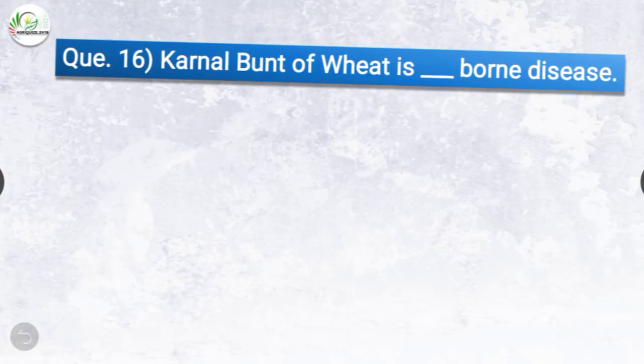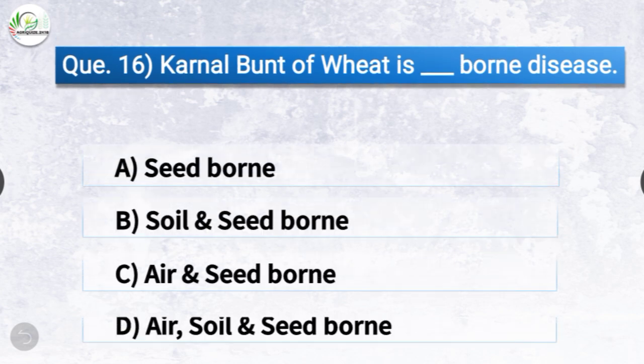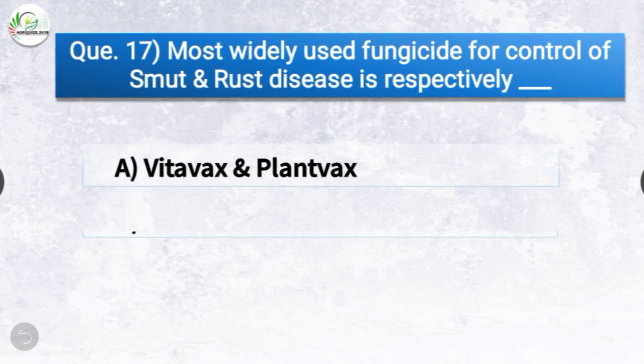Question number sixteen: Kernel bunt of wheat is dash-borne disease. The options are seed-borne, soil and seed-borne, air and seed-borne, or air, soil and seed-borne. The correct answer is option D, air, soil and seed-borne. Karnal bunt of wheat is an air, soil and seed-borne disease.